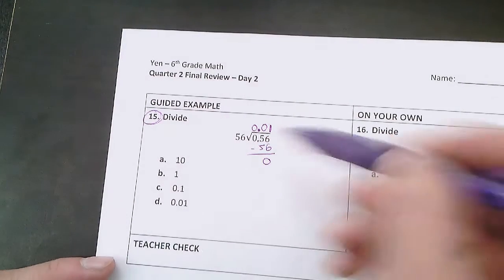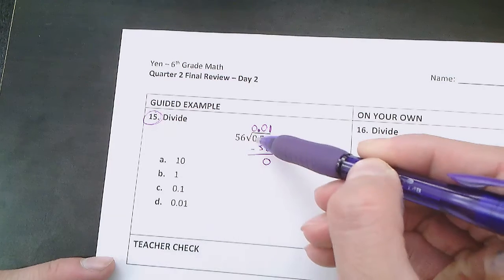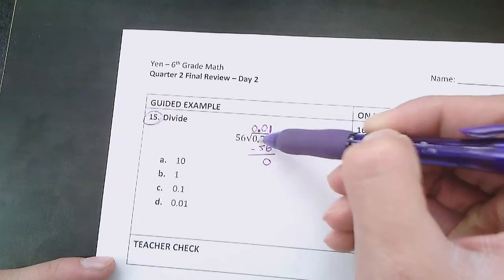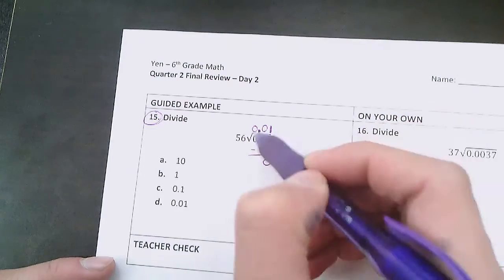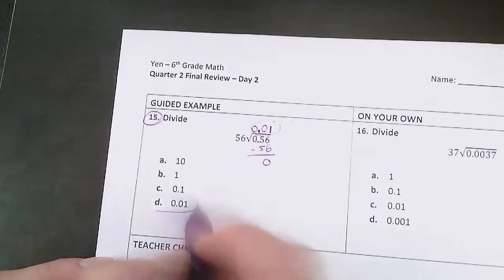So it's really important to keep track of your place value, where the decimal is, and where you're dividing into each number. So 0.01 is my answer right there.